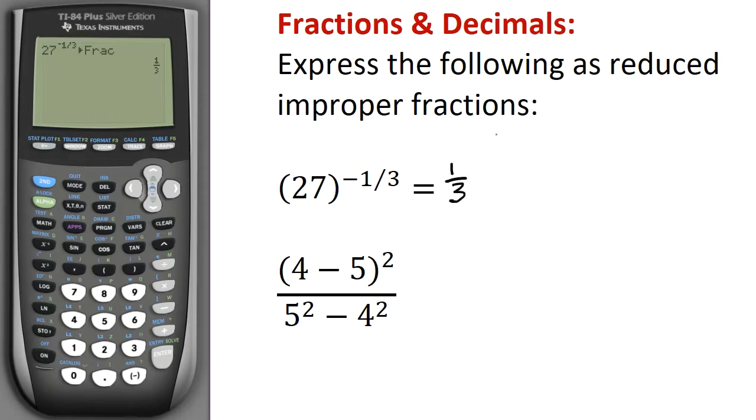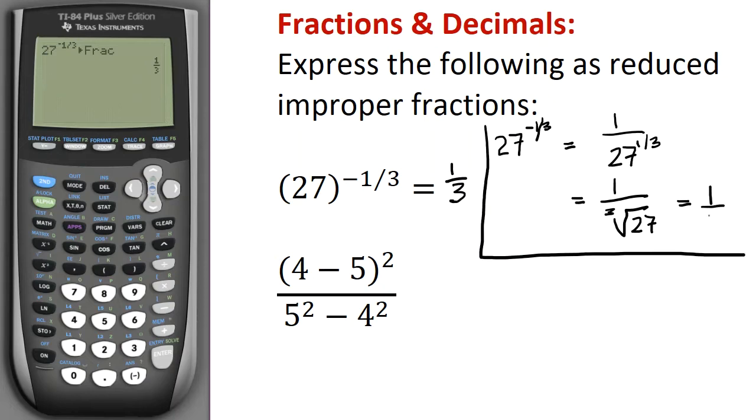So let's just verify that that is in fact correct. So I know 27^(-1/3), that's just the same as 1 over 27 to the positive 1/3, and that, of course, is 1 over the cube root of 27, and that is 1/3, because 3 to the power 3 is 27. So it's much easier just to do it on the calculator.